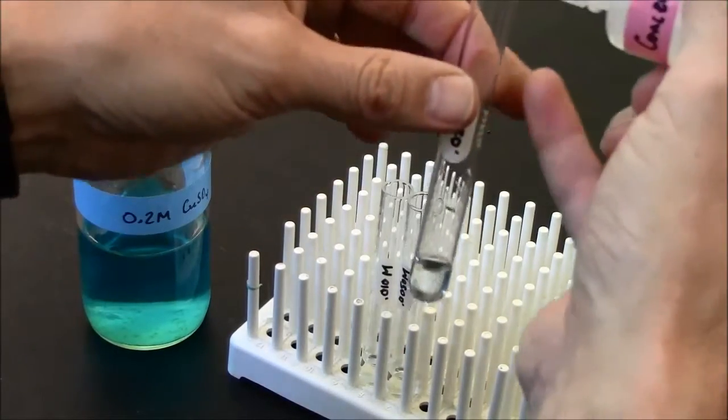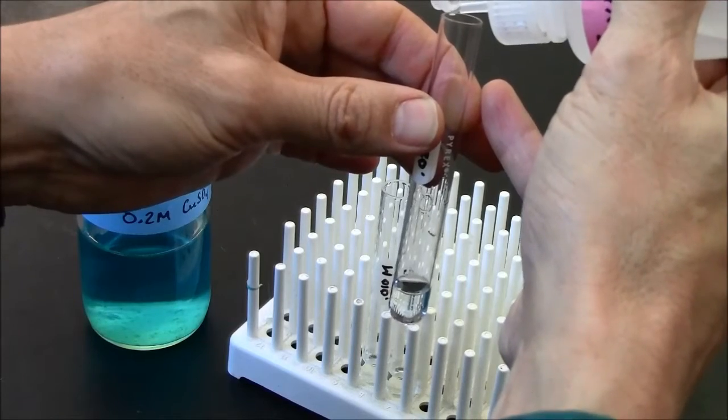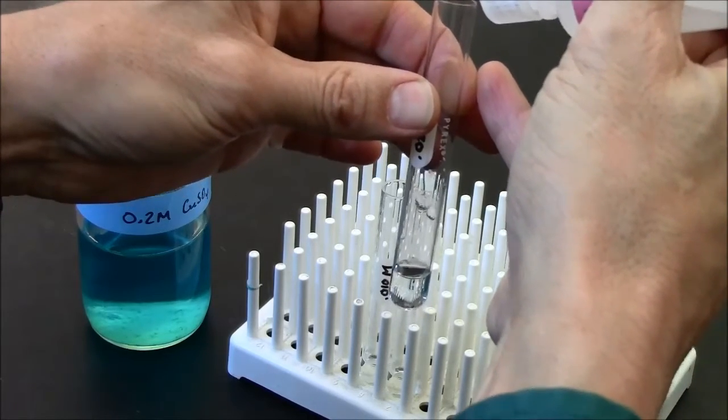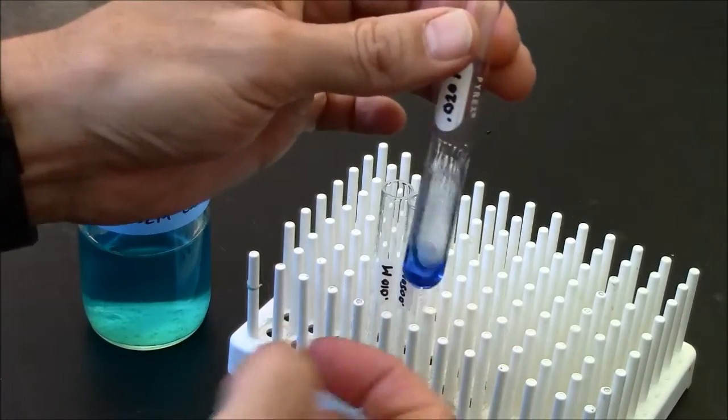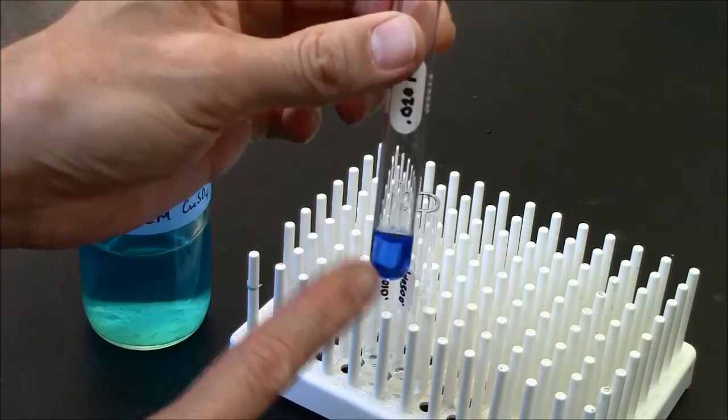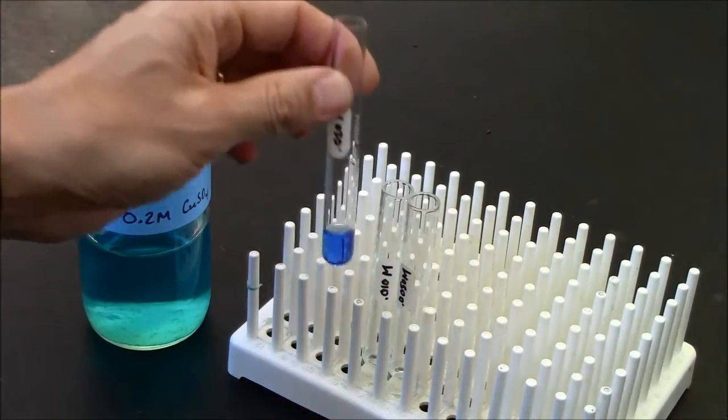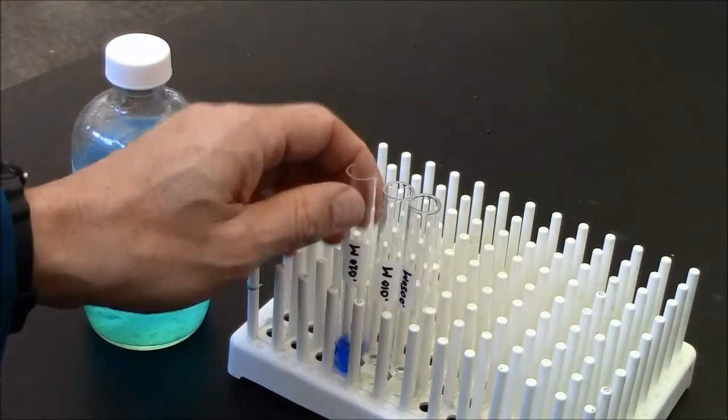So here I'll add five drops of the concentrated ammonia. One, two, three, four, five. And as I stir this, you can see a very vibrant blue color appears, and the intensity of this color is proportional to the concentration of the copper ions. So that happened to be 0.020 molar.